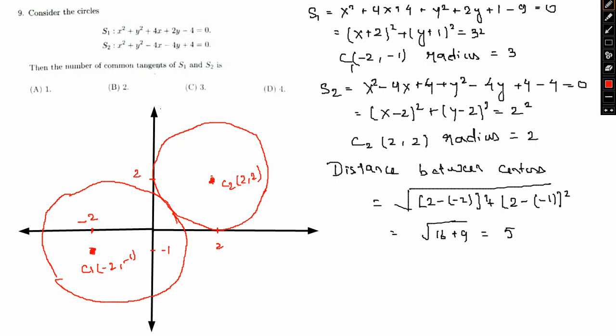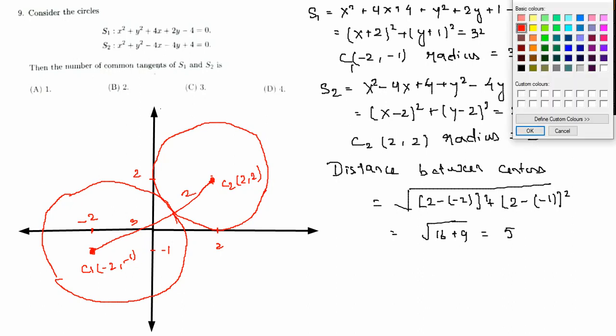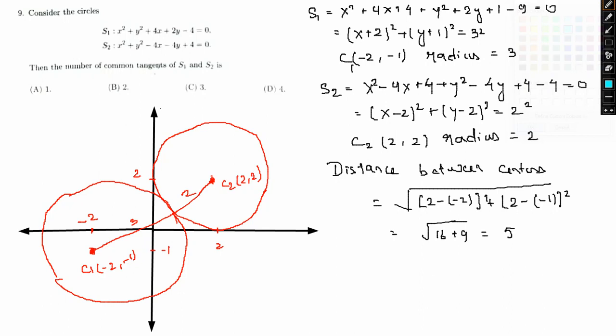So from here to here, this will be 2. From here to here, this is 2. This radius will be 3. So now if I am to find the number of common tangents in this regards, so what the common tangents would simply be. So if we take a look, one of the common tangents would go from here to here, 1.